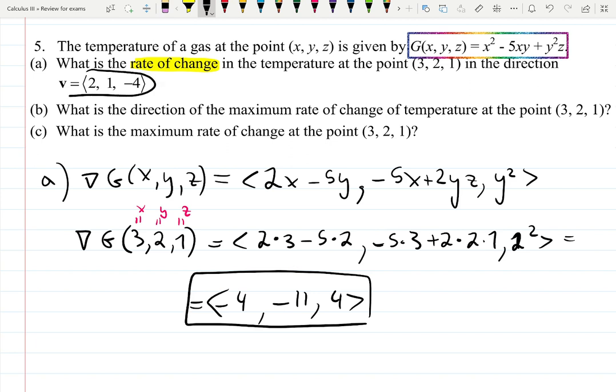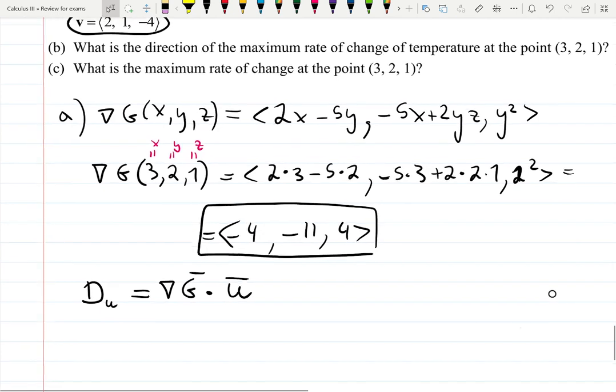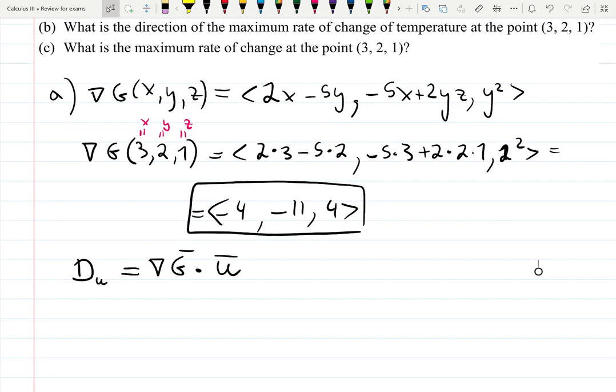We also are given a direction. Remember we can't use this direction unless it's a unit vector. This vector is not a unit vector, so to build D_v (in this case it's v), we need to multiply gradient G times vector u. Thus I need to first find a unit vector u. Unit vector u is v over ||v||.